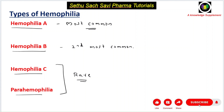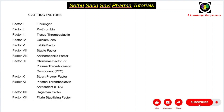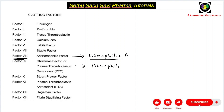There are clotting factors 1 to 13. When there is a defect or mutation in clotting factor 8, there will be a deficiency of clotting factor 8, resulting in Hemophilia A. In Hemophilia B, there will be a deficiency of clotting factor 9. In Hemophilia C, there will be a deficiency of clotting factor 11.